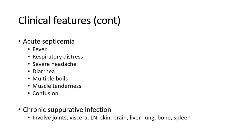For those with chronic suppurative infection, it is a chronic form of melioidosis that typically involves areas such as the joints, viscera, and others.